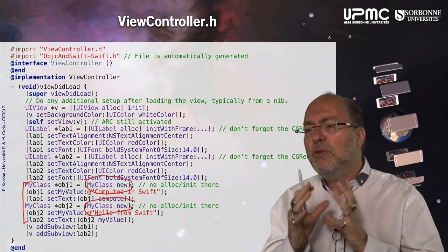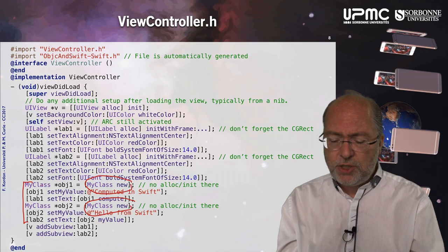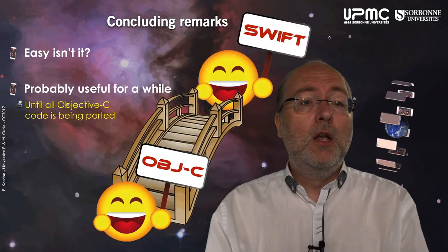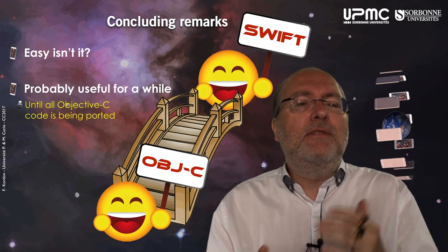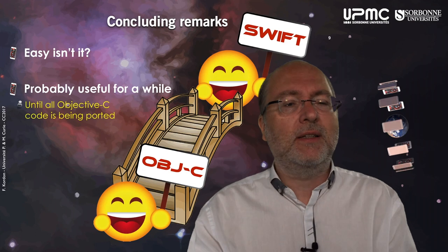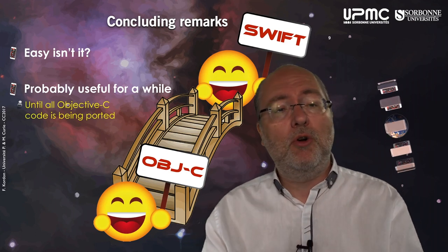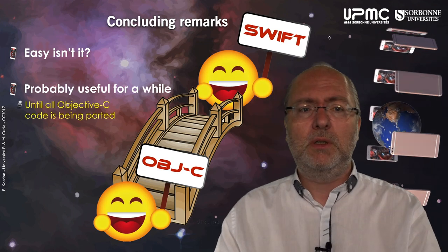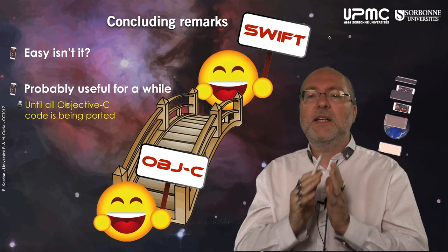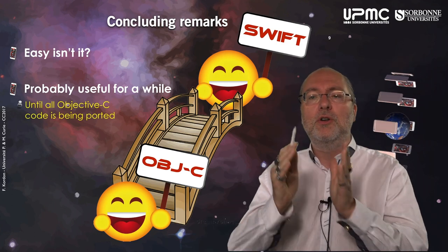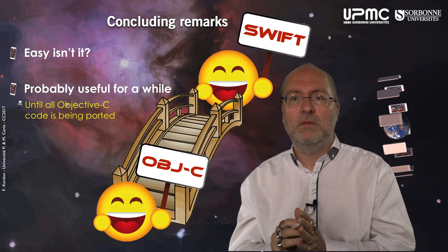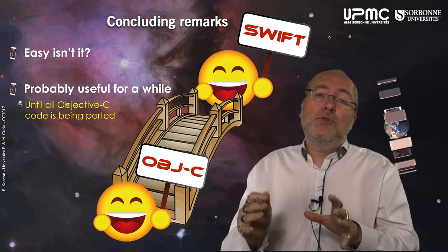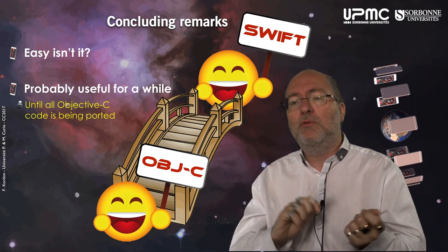So it's quite simple — there are not that many difficulties. You just have to be careful with these tricks. It's as easy as invoking Objective-C from a Swift project. This will probably be useful for a while until all Objective-C code has been migrated. And you can imagine a situation where you invoke Objective-C from Swift and then some Swift again. Within the same project, you can have both directions activated.